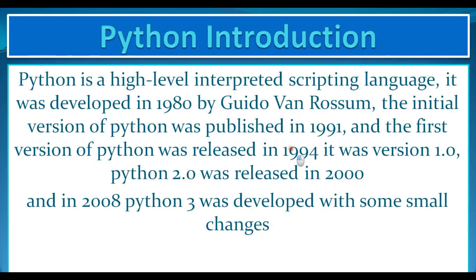Python is a high-level interpreted scripting language. It was developed in 1980 by Guido. The initial version of Python was published in 1991 and the first version, Python 1.0, was released in 1994. Python 2 was released in 2000, and in 2008 Python 3 was developed with some small changes.